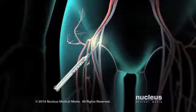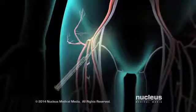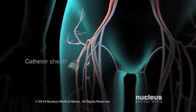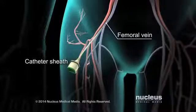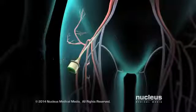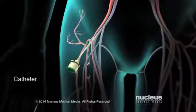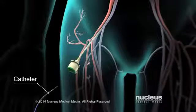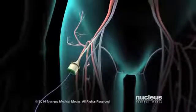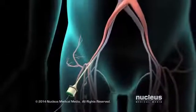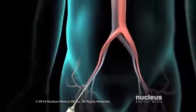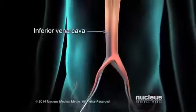After numbing a small area in the groin with a needle, the doctor will insert a short hollow tube, called a catheter sheath, into the femoral vein. Next, a long flexible tube, called a catheter, will be inserted through the sheath. The doctor will guide the catheter to the heart through a blood vessel called the inferior vena cava.